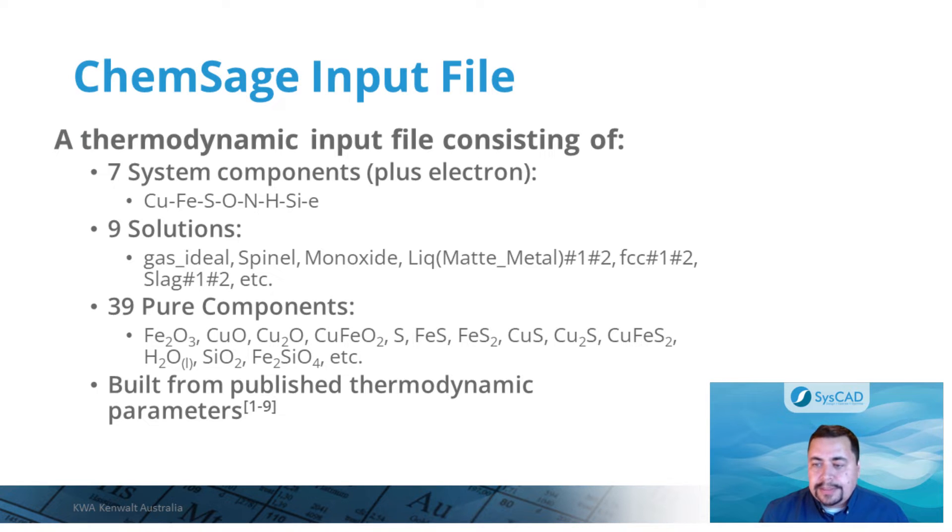These components generate all the mixture phases and pure compounds that are required, including the ideal gas phase, liquid matte or metal, slag, spinel, monoxide, etc. The ChemSage input file includes nine solutions and thirty-nine pure compounds and it was created as a plain text file using published data in publicly available technical literature.